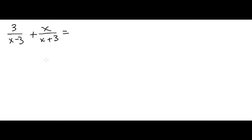The key thing you need to do in this problem is remember that with fractions you need to have a common denominator. So the easiest way I find to do that is to multiply each term by the stuff it's missing.